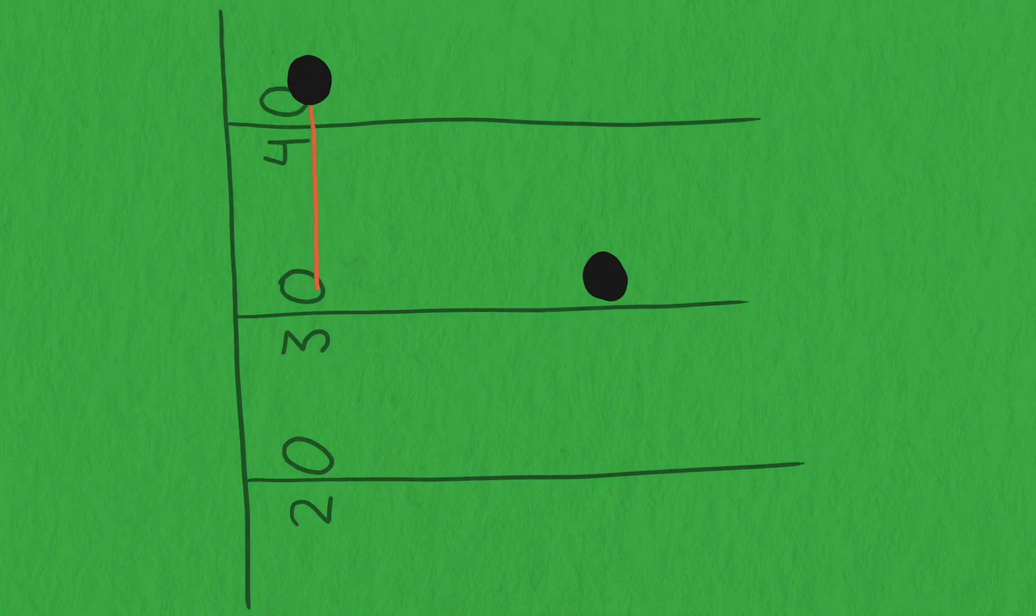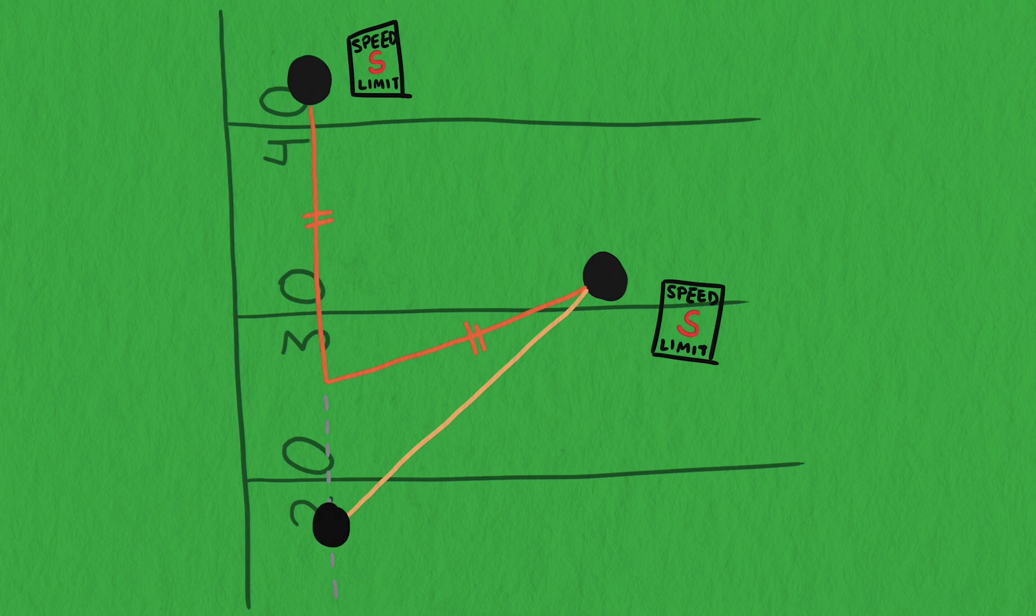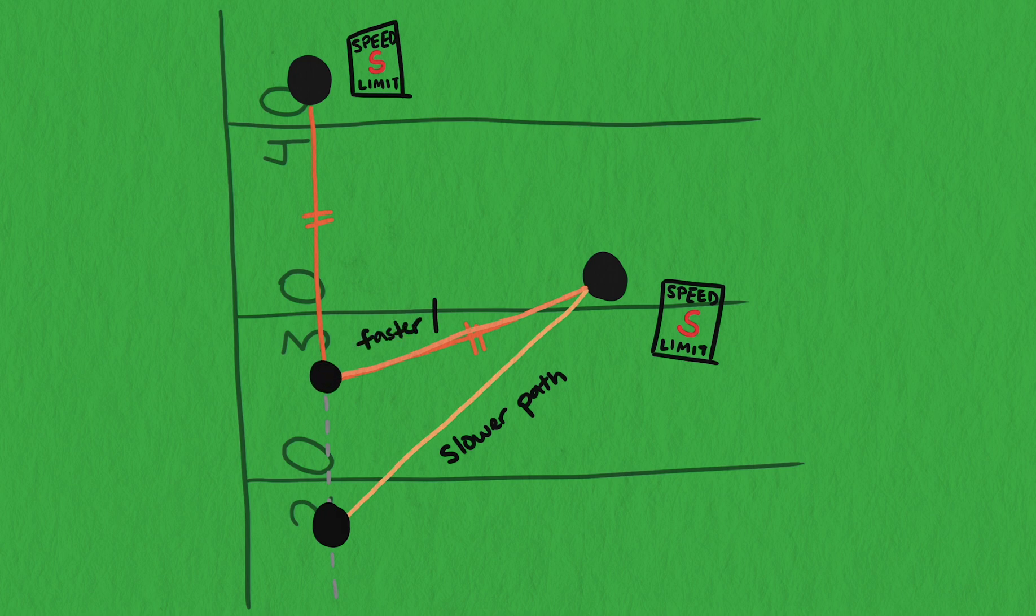Remember that this path is based on our assumption that the players have the same speed. If the DB is not as fast as the ball carrier, then he will need to run further downfield. On the other hand, if the DB is faster than the ball carrier, then he has some cushion and doesn't need to err on running down the field.